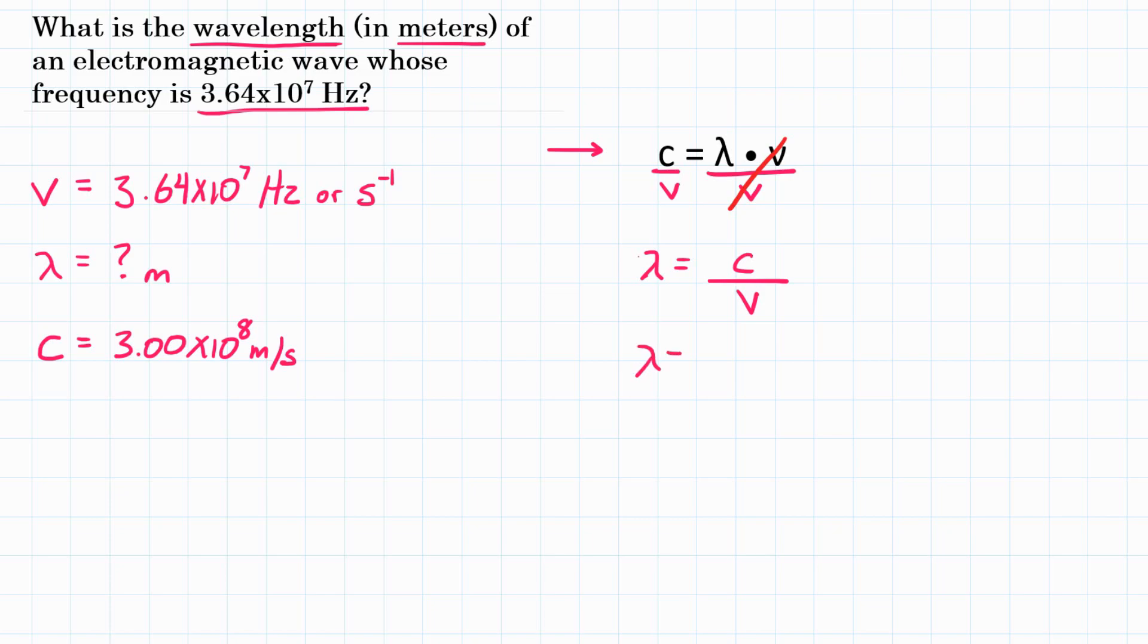So wavelength is going to be equal to the speed of light, and we know that is 3.00 times 10 to the 8 meters per second. Don't forget your units. Divided by frequency, and the problem gave us that. It was 3.64 times 10 to the 7th, and the units are seconds to the negative 1 power.